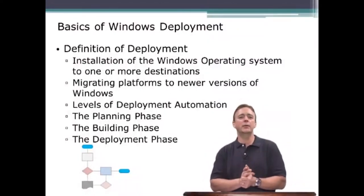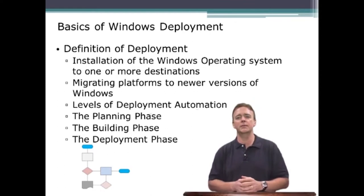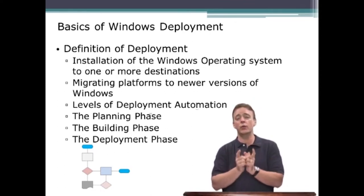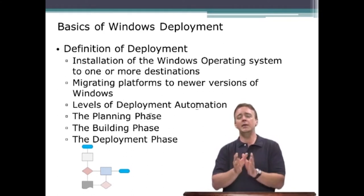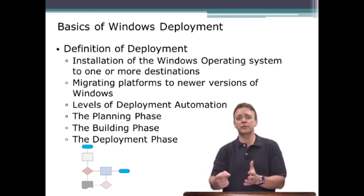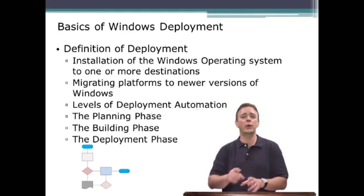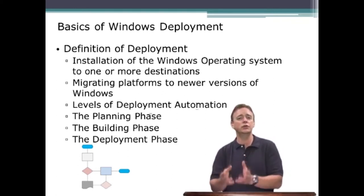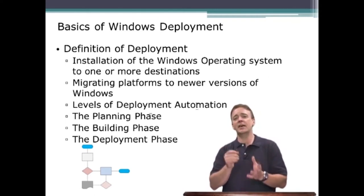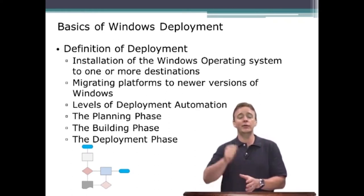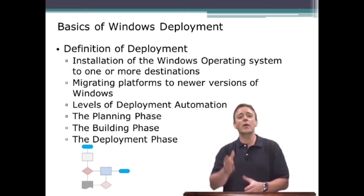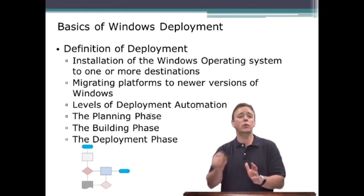Deployment is just what it sounds like: taking an image — a ready-to-go release of your operating system — and putting it onto a target. A ready-to-go image means it's not you inserting a DVD and answering a bunch of questions; it's a set of files you copy to the hard drive, and once copied, you turn the machine on and Windows is ready to go. We want to do that installation to more than one destination at a time.